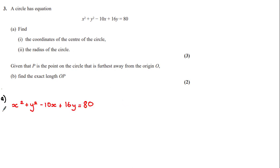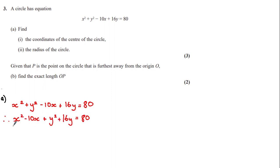So how do we go about this? We have the equation given for the circle, and what we could do is group the like terms and then complete the square of those terms in order to get it closer to the form we are looking for. Grouping the like terms we get: x squared minus 10x plus y squared plus 16y is equal to 80.